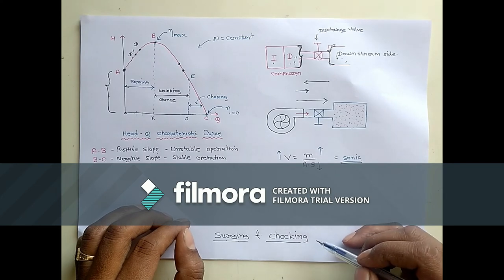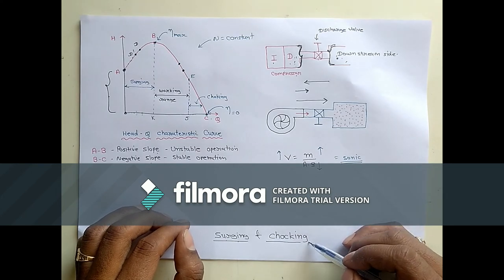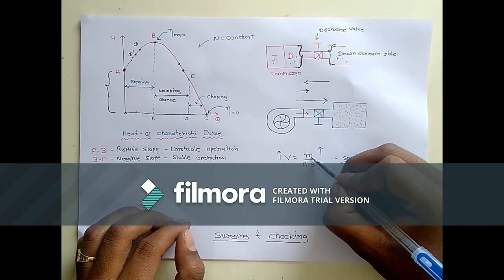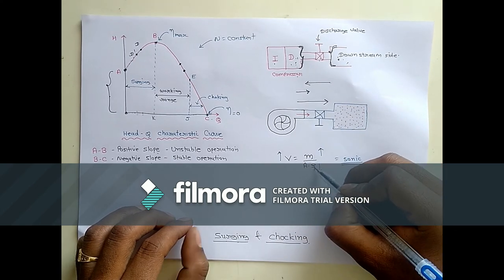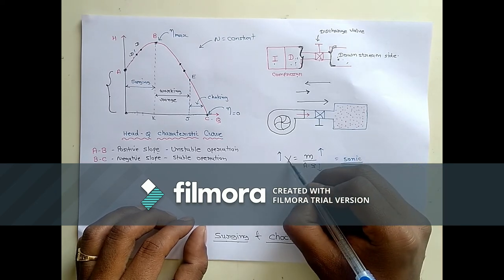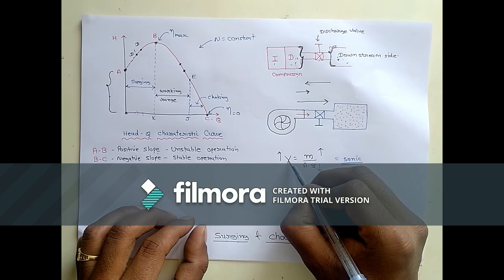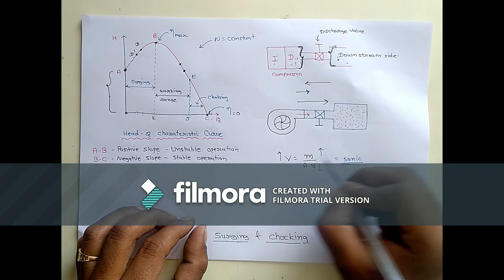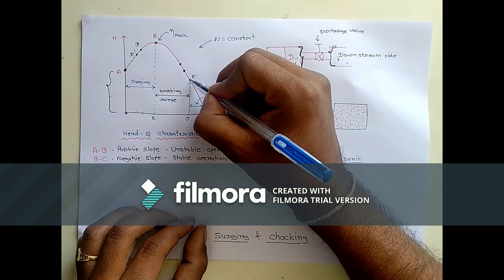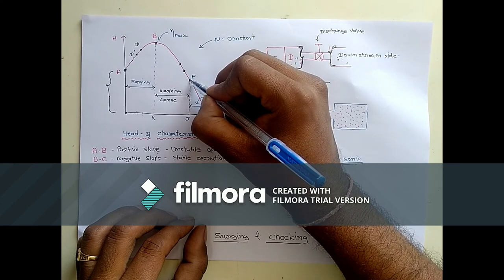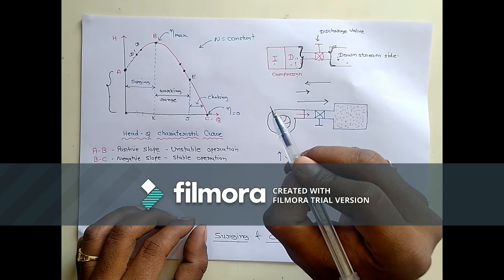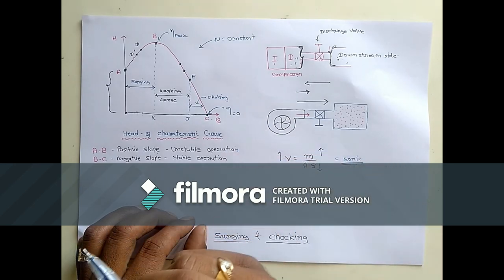Now we will talk about the other phenomenon, which is choking. Choking means that as the mass flow rate increases, the density decreases. So mass flow rate increases and density decreases, and ultimately the velocity of flow increases. If the velocity of flow achieves the sonic velocity — at point E the velocity is sonic velocity — beyond point E the discharge will not increase further.